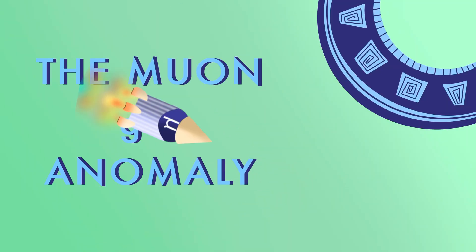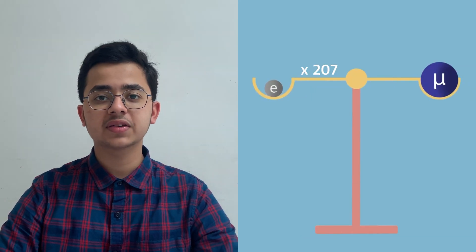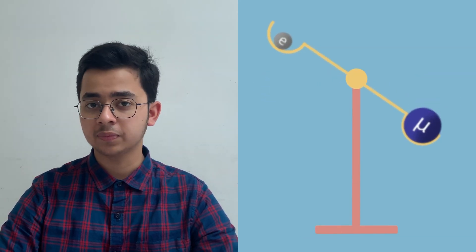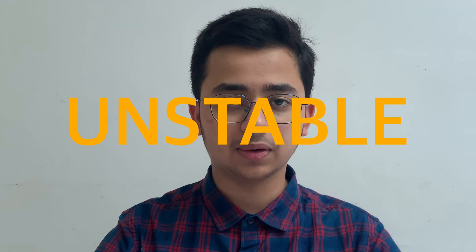But this video is not about tops — it's about the muon g-2 anomaly. What's a muon? Simply put, it's a close cousin of the electron. It has the same charge, same spin, same everything except its mass. A muon is 207 times the mass of an electron, which makes it quite unstable. Its lifetime is just about two microseconds — but that's enough time for a phenomenal observation.